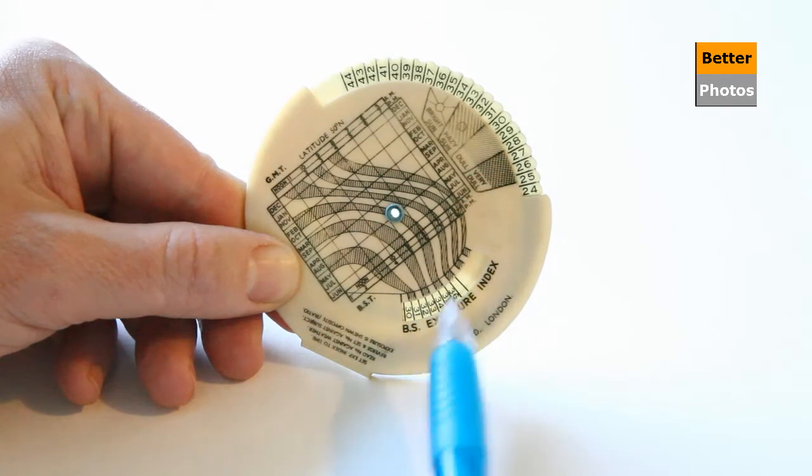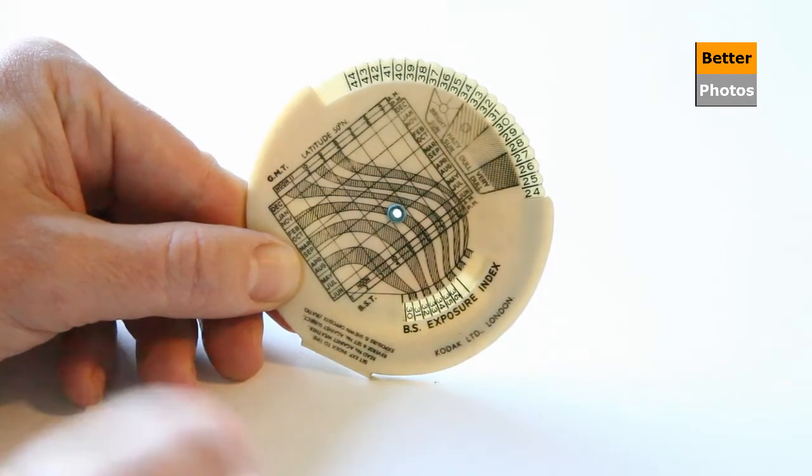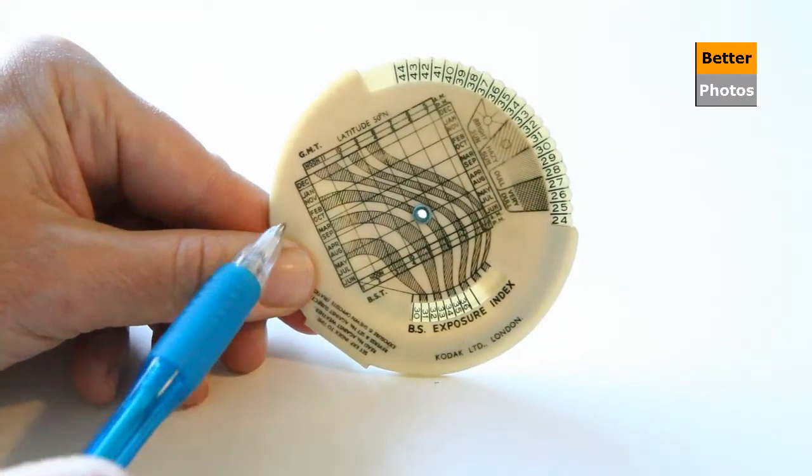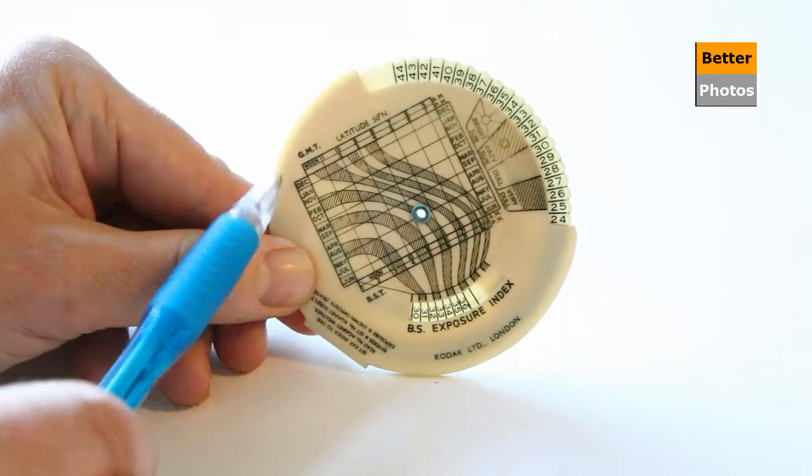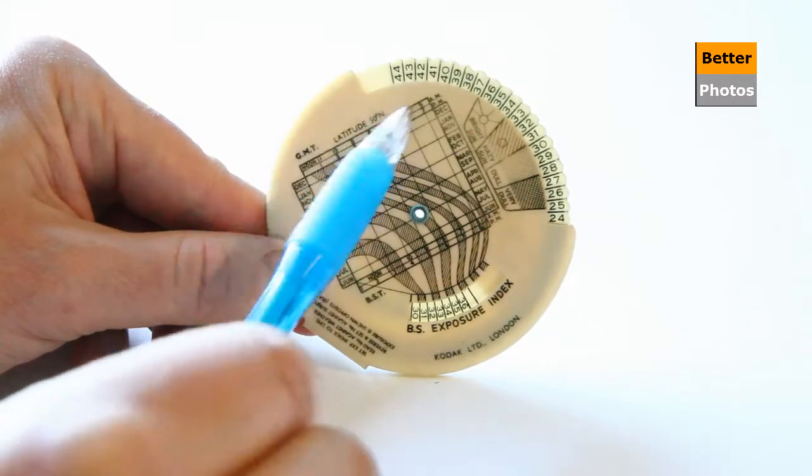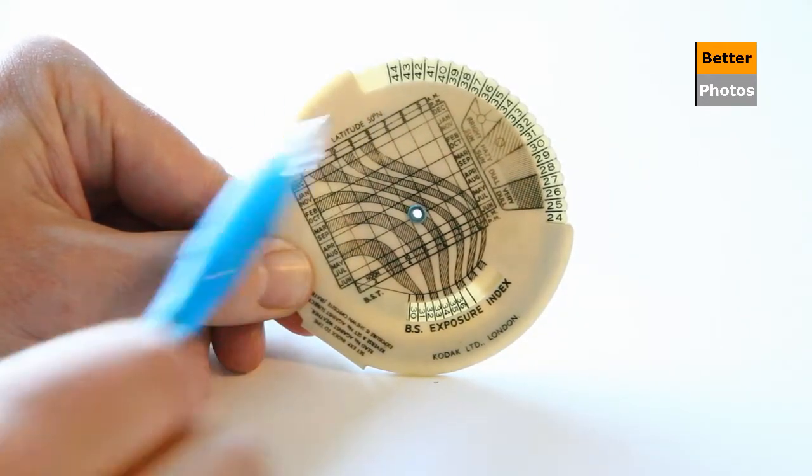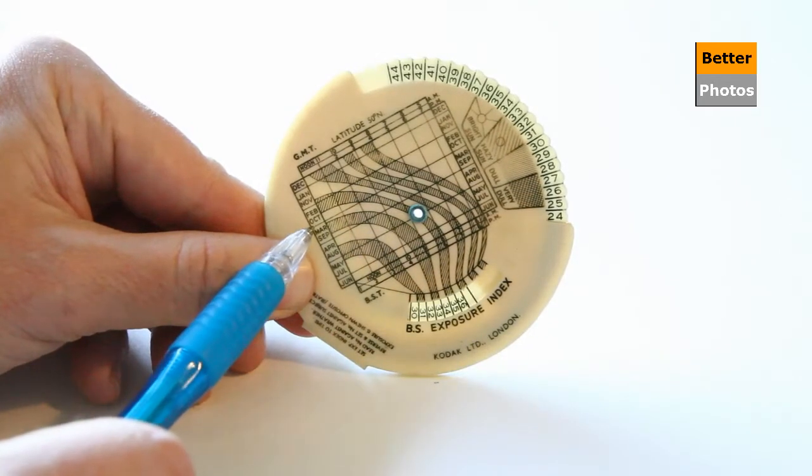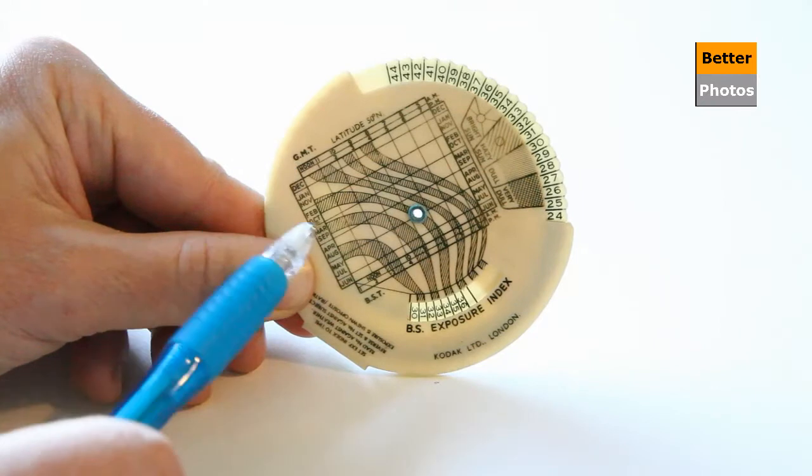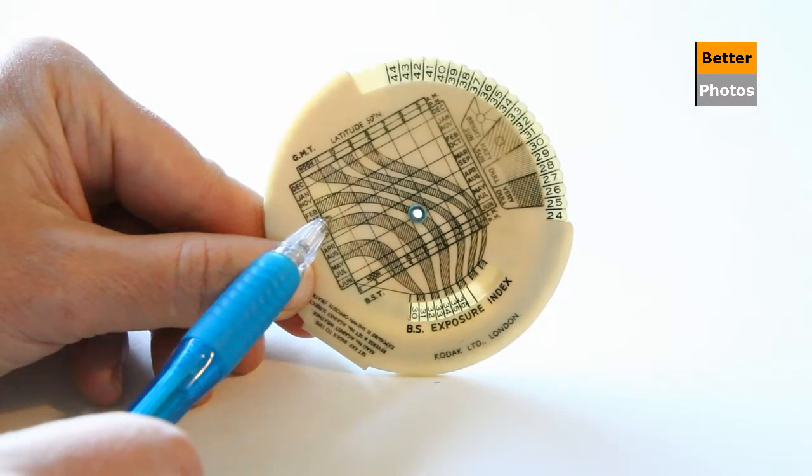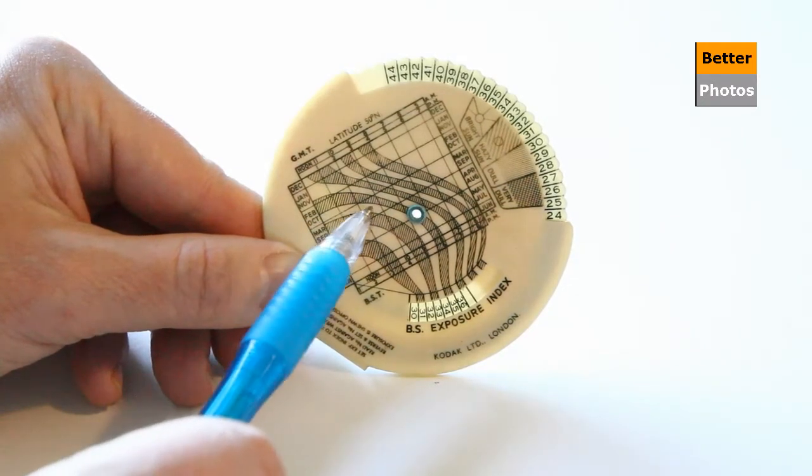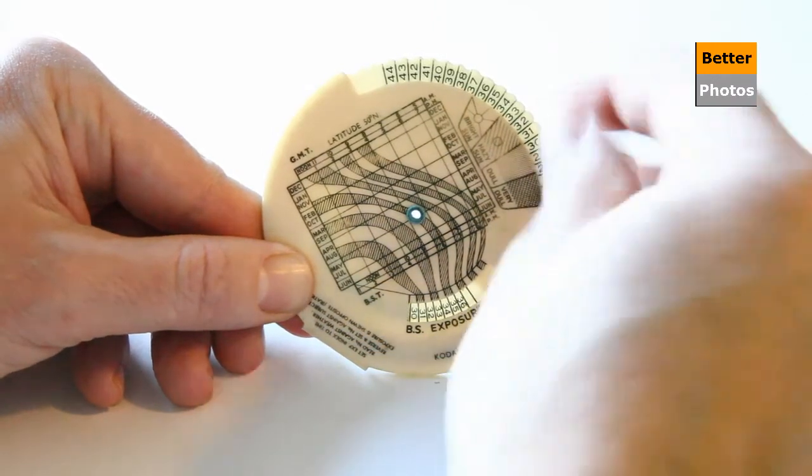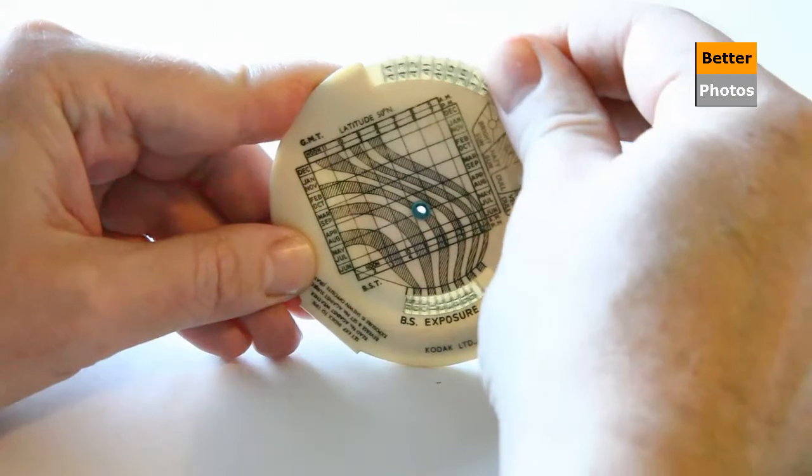So we've got some numbers there to dial in but first of all what we need to do is decide or determine the time of year and that's shown on this section, and the time of day that we're taking pictures in along this section. So for example if we're saying we're taking pictures in October, hopefully you can just see that at noon, that's that little section there, we follow that little white line down and this is the part where we dial in our film speed.